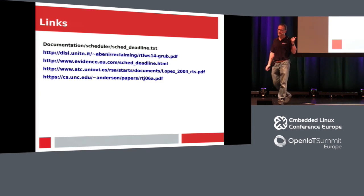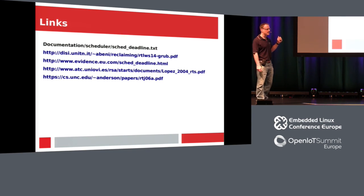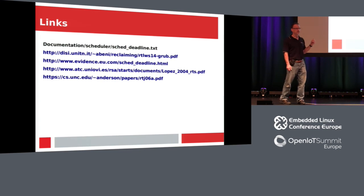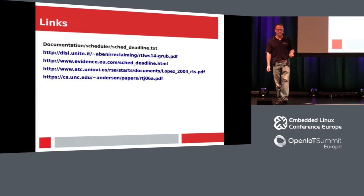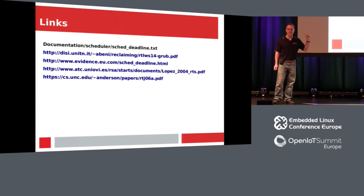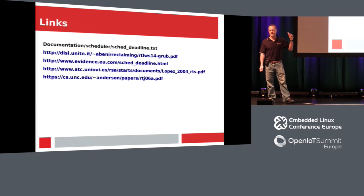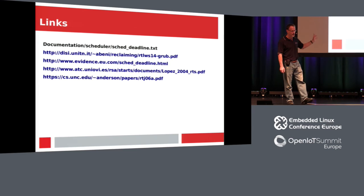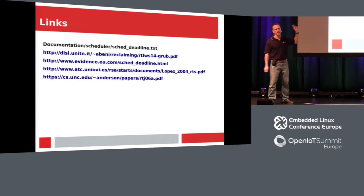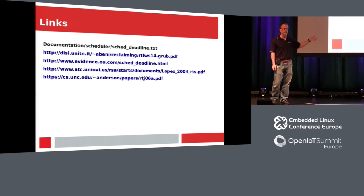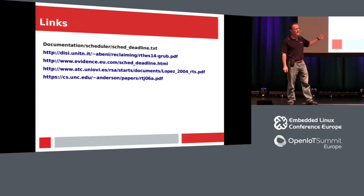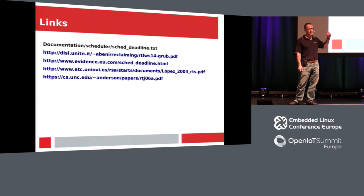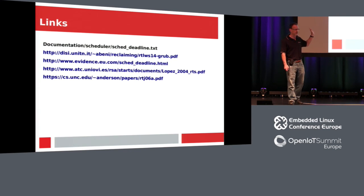Here's a bunch of links. The top one is right in the kernel: Documentation/scheduler/sched-deadline.txt — a lot of what I talked about is in there. There are also several papers I read before giving this talk. The Anderson papers at the bottom have a lot of really nice real-time papers — you could be there reading all day, all week, all month.